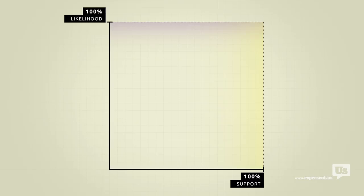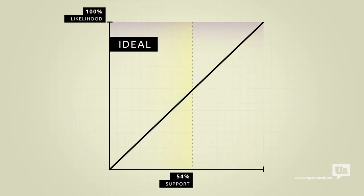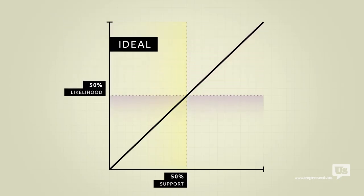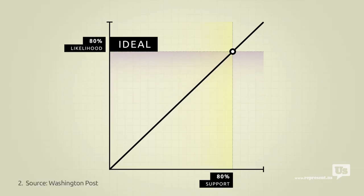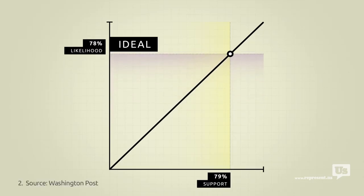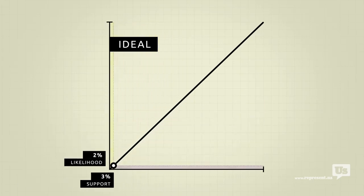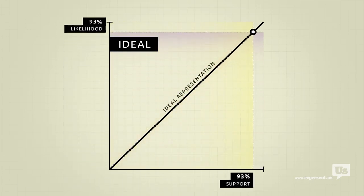On this graph, an ideal republic would look like this. If 50% of the public supports an idea, there's a 50% chance of it becoming law. If 80% of us support something, there's an 80% chance. You get the idea. Most Americans would probably agree that, with a few exceptions, we should be as close to this ideal as possible.